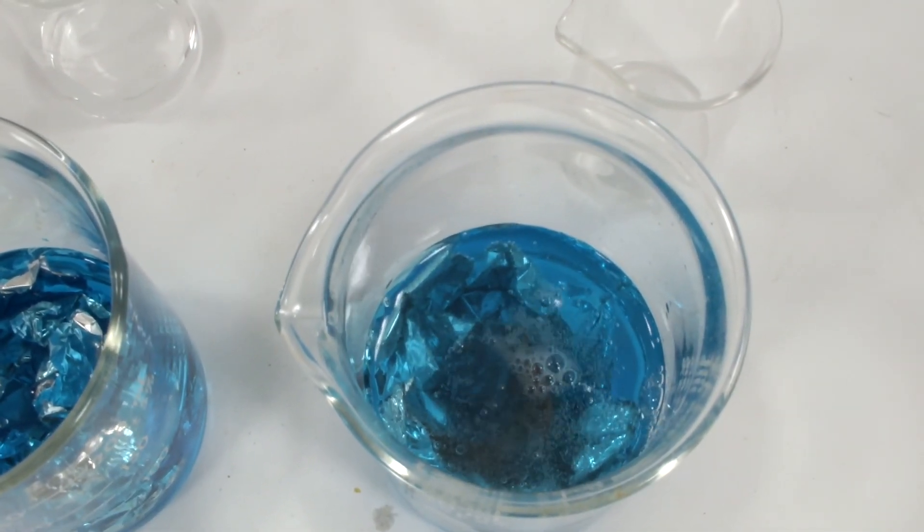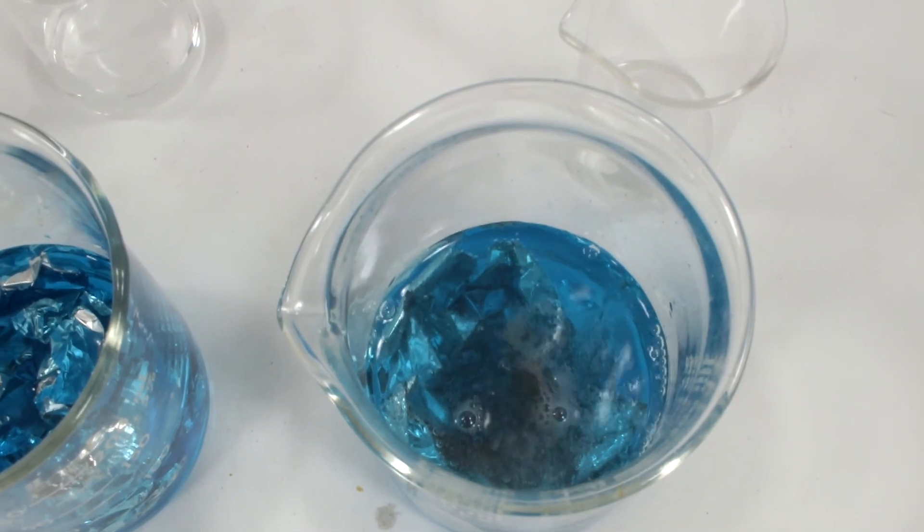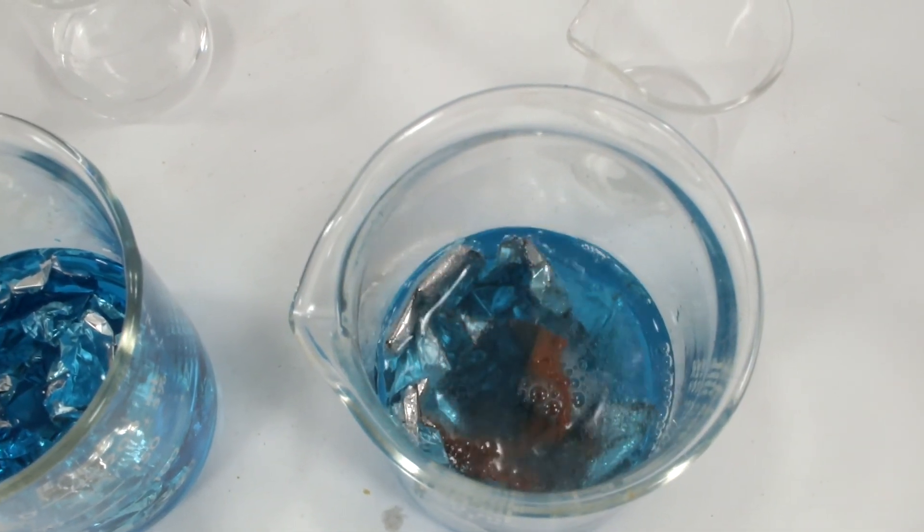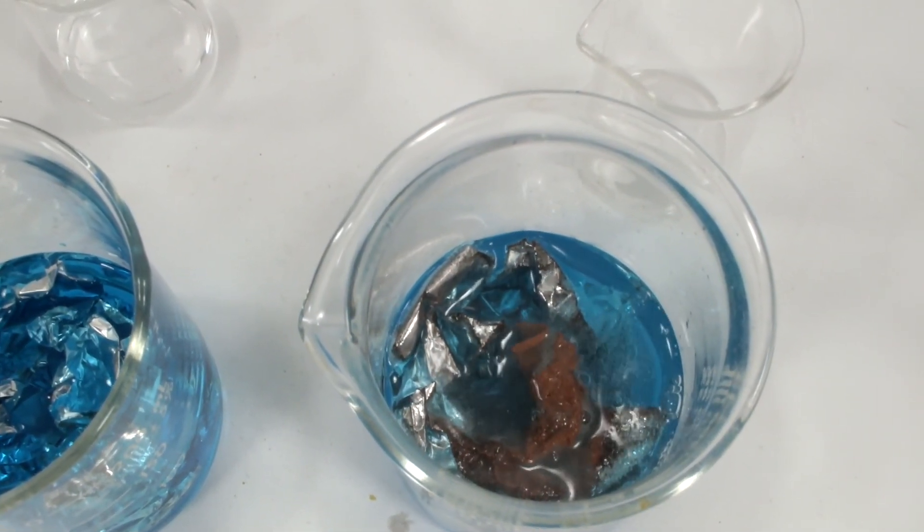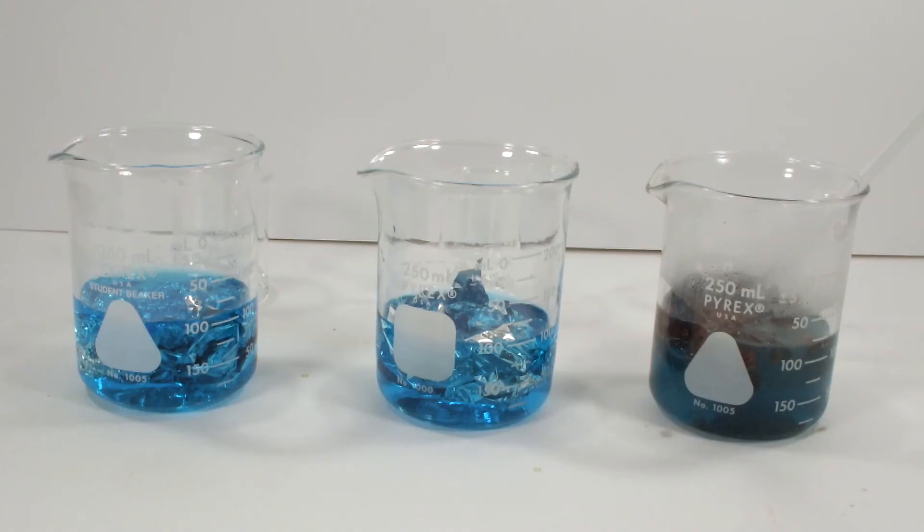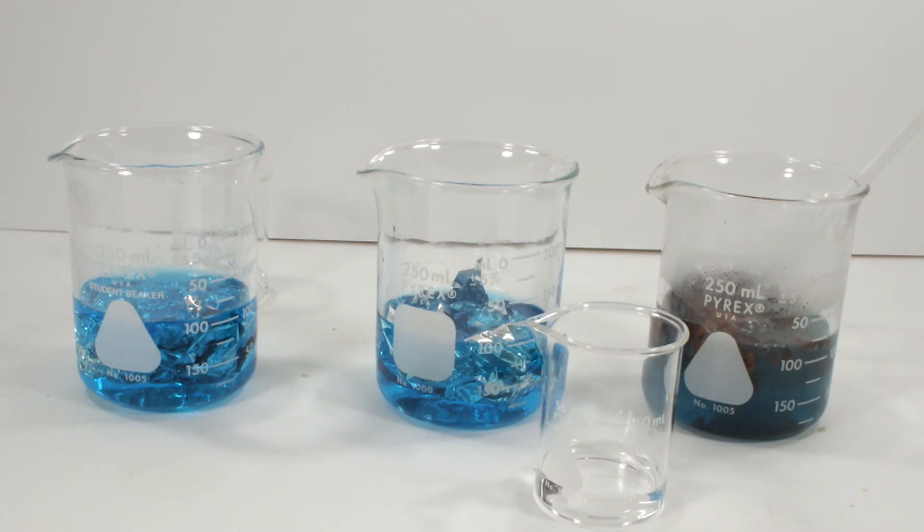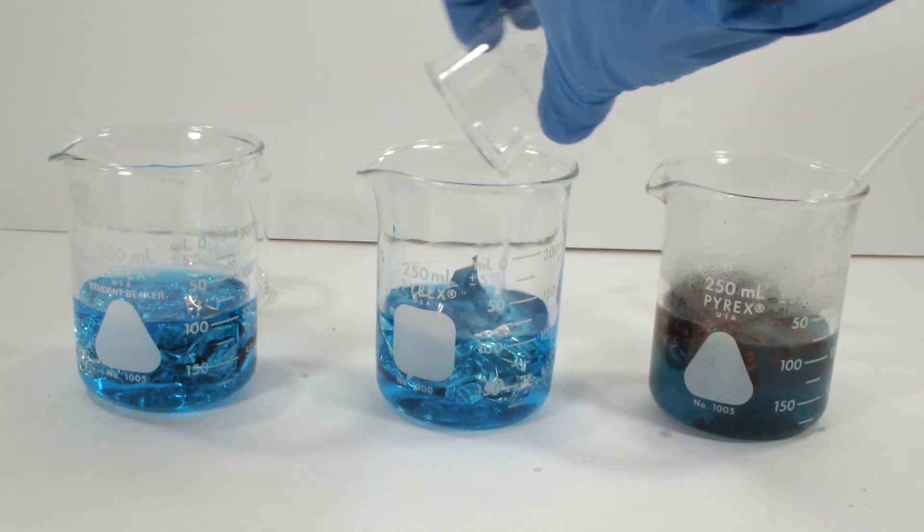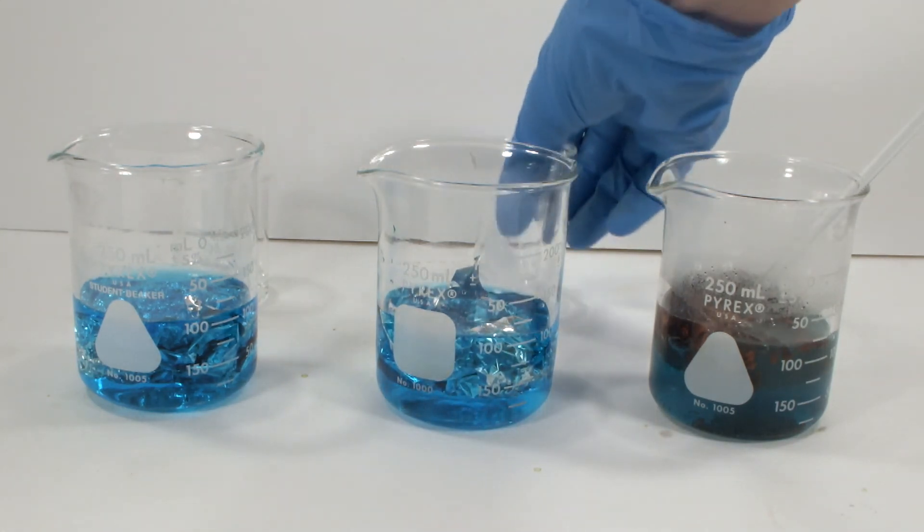But I can hear you. What if it's the acid that's causing the aluminum to react? I hear you, and I have the same question. So hiding behind beaker number two is ten milliliters of a three molar sulfuric acid solution. This is the same acid concentration as before, since sulfuric acid is diprotic. Upon addition, there's absolutely no reaction.